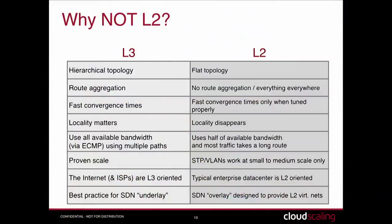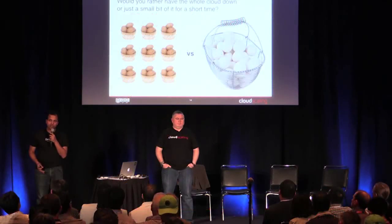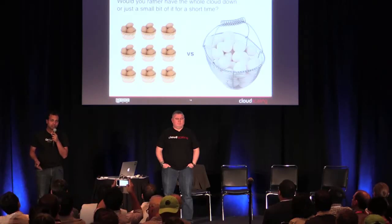Why not L2? L2 is where the topology is flat and the addressing is flat, so each router has to maintain a database of all entries in the network — that obviously does not scale for a huge cloud provider. And we run into the same problems with STP and VLANs. We wanted small failure domains so that if a zone node fails, it takes down as small a part of the network as possible.